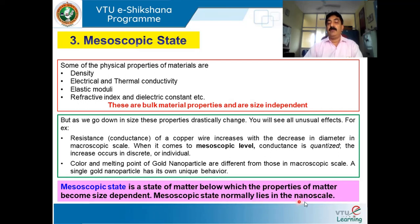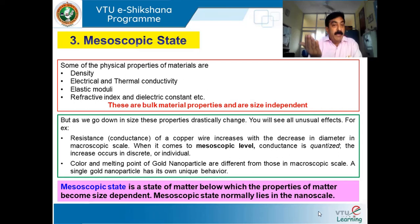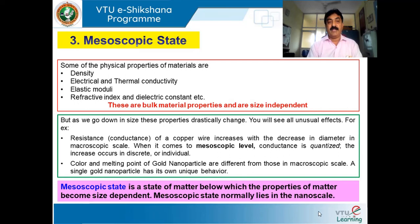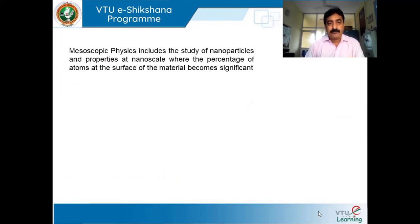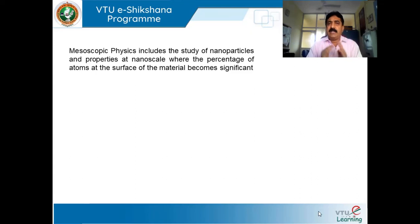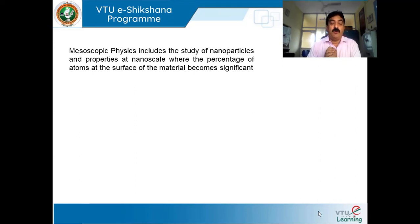The mesoscopic state normally lies in the nanoscale — starting at 10 to the power minus 9 or perhaps 10 to the power minus 8. Mesoscopic physics is the real physics where we need to explore a lot. As of now, we know very little about mesoscopic state and mesoscopic physics. Mesoscopic physics includes the study of nanoparticles and their properties at nanoscale, at 10 to the power minus 9, where the percentage of atoms at the surface becomes significant.